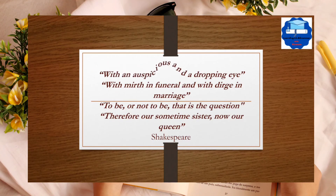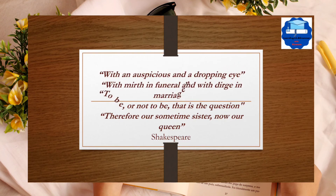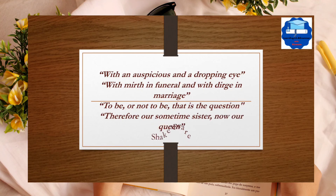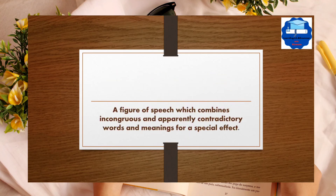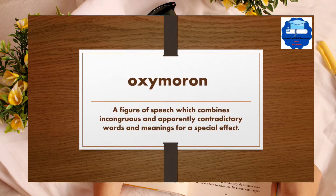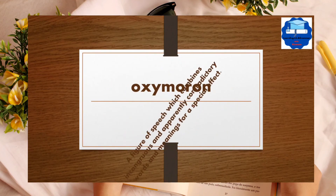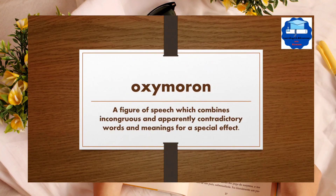Shakespeare has also used antithesis very beautifully: 'With an auspicious and a dropping eye, with mirth in funeral and with dirge in marriage.' And the famous line: 'To be or not to be, that is the question.' Also: 'Therefore our sometime sister, now our queen.'